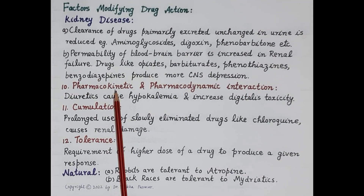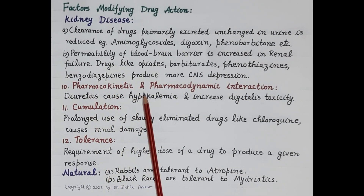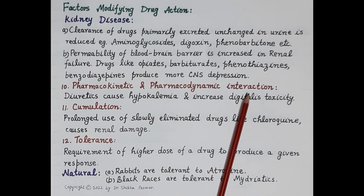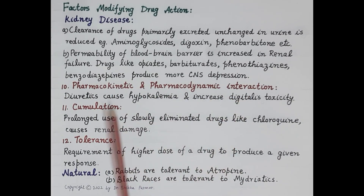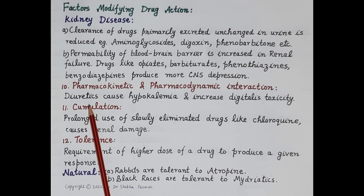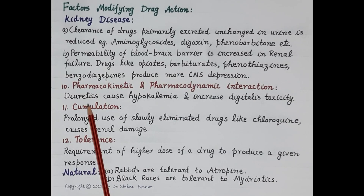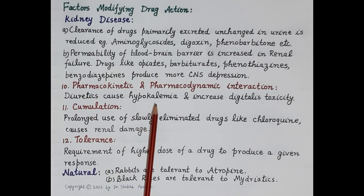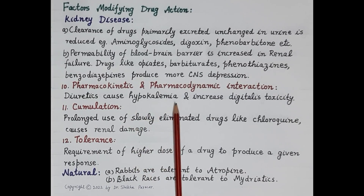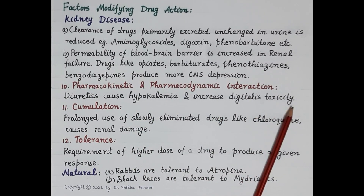Another factor is pharmacokinetic and pharmacodynamic interaction. For example, diuretics increase the volume of urine and cause a loss of potassium from the body, leading to hypokalemia — low potassium in the blood. Hypokalemia increases digitalis toxicity.